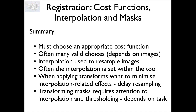That's all I want to say in this video. We've looked at the fact that there are different cost functions and often multiple valid choices, but you need to make a choice - it will often be included as a default within a pipeline, but it's very good to check, particularly if you're doing anything unusual. Interpolation is used to resample images; it's again often set within the tool, but when applying to a mask you need to choose appropriately and that can include a threshold. Often when applying multiple transforms, we delay resampling and avoid multiple resamplings in order to retain image quality.